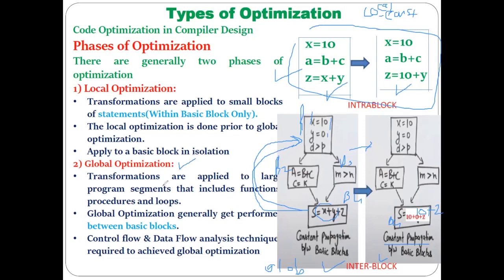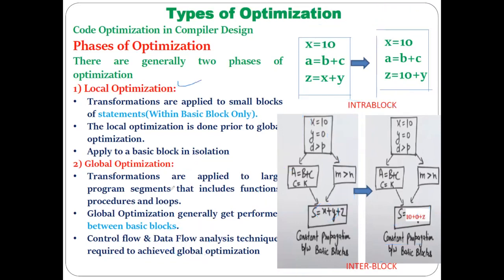Global optimization will also be discussed in the next unit. To perform global optimization, different techniques are required — specifically control flow analysis and data flow analysis techniques. The graph shown is a control flow graph, which is a directed graph showing the flow of control of information.